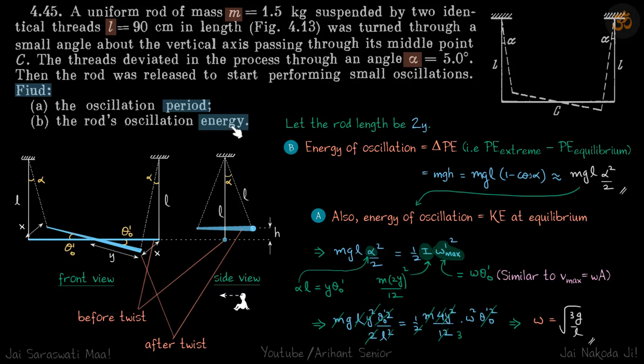Let's find the rod's oscillation energy first and then we will bother about period. Energy of the oscillation can be written in two forms: either change in potential energy, where this change is between extreme and equilibrium.